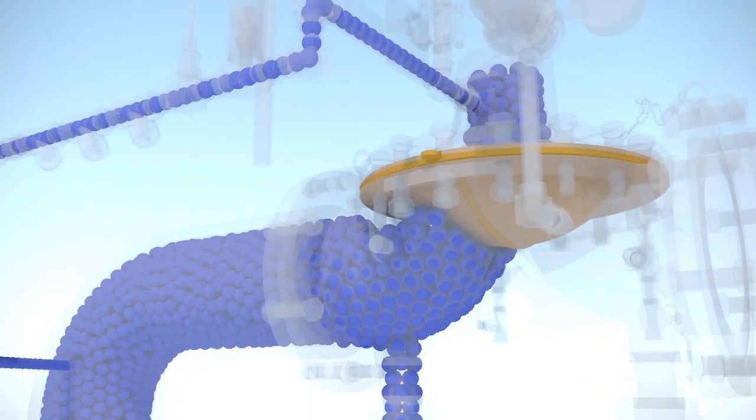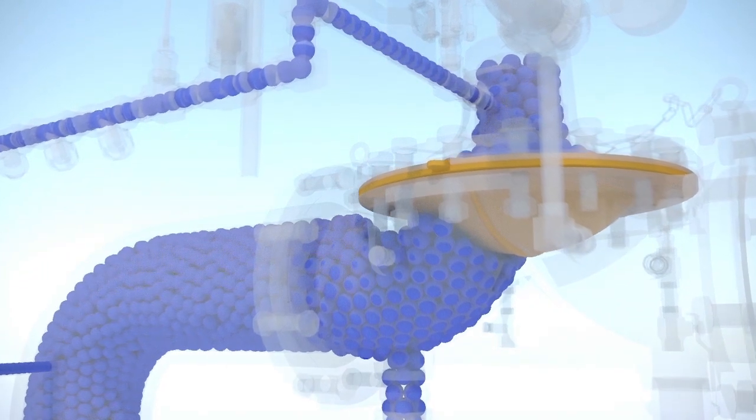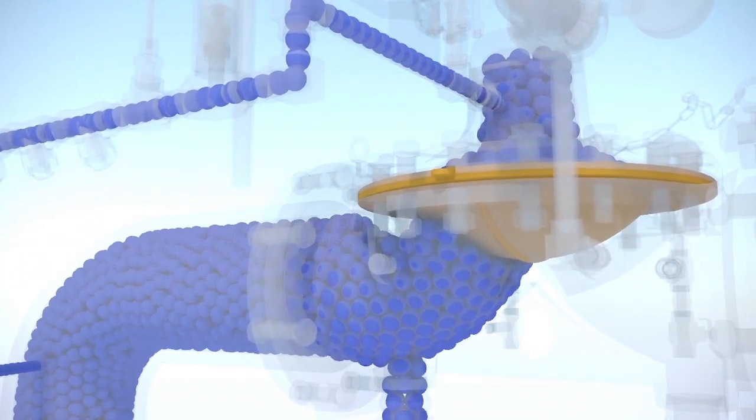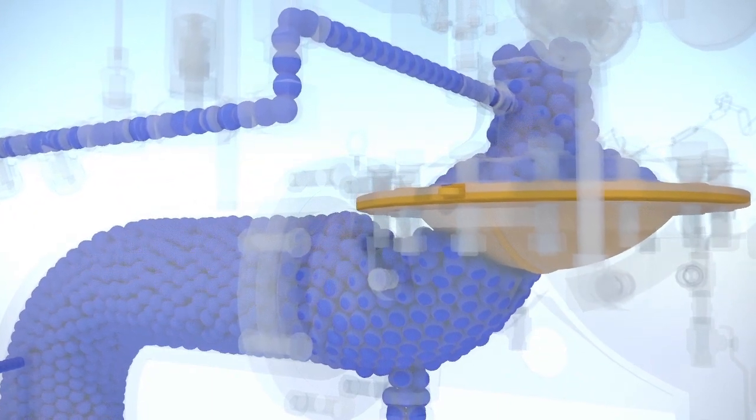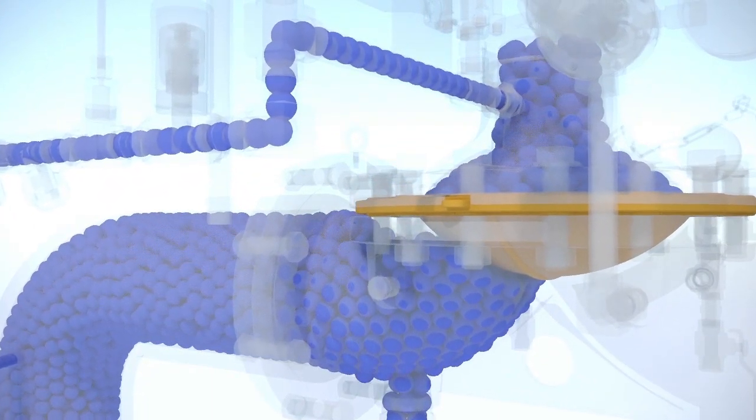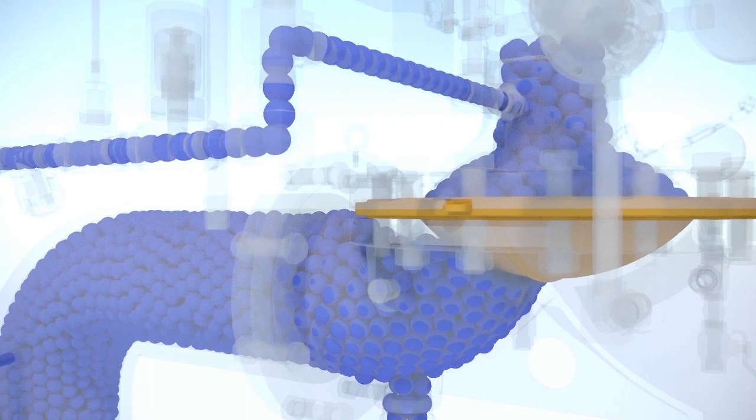In order to keep the valve closed, the same water from the main is used to fill the priming chamber. Besides the water being at the same pressure, the difference in the surface contact between the priming chamber and the lower diaphragm will keep the valve closed tightly.